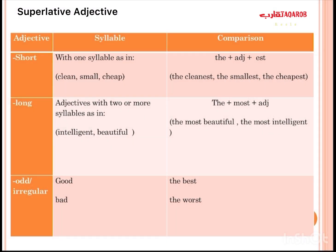We have short adjectives, long adjectives, and irregular adjectives. To distinguish between them, focus on the number of syllables. Words like pig, tall, cheap, small, clean, hot, cold, large all have one syllable. If the adjective has one syllable, we call it a short adjective.